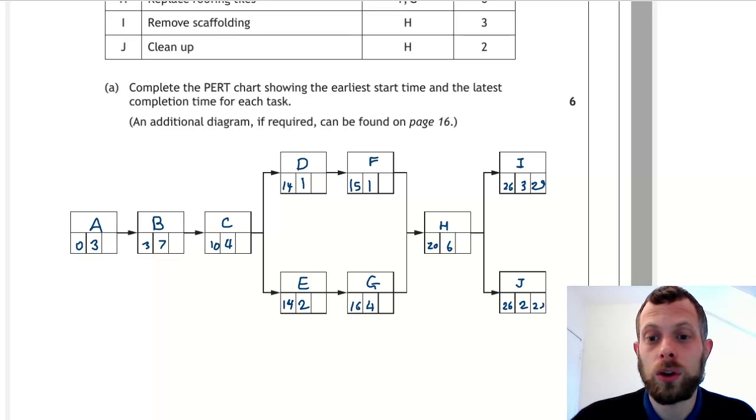So the entire project will take at minimum 29 hours to do. Backward scan: be aware there's a mistake in the TJ textbook, it gets this wrong. 29 take away three is 26, 29 take away two is 27. 26 is smaller so we take 26 here. 26 take away six is 20, so this is 20. And again, 26 take away six is 20 here.